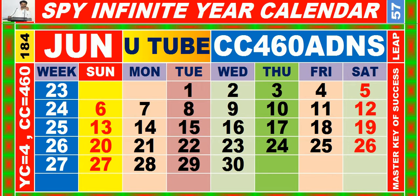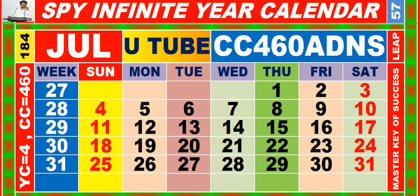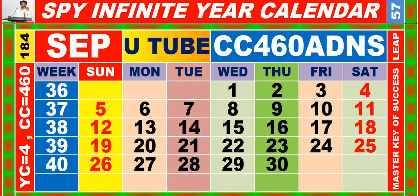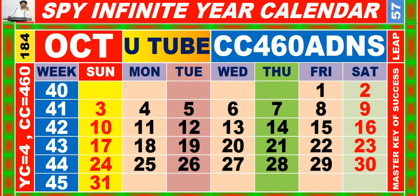Calendar for the month of June having calendar code equal to 4-6-0. Calendar for the month of July having calendar code equal to 4-6-0. Calendar for the month of August having calendar code equal to 4-6-0. Calendar for the month of September having calendar code equal to 4-6-0. Calendar for the month of October having calendar code equal to 4-6-0.